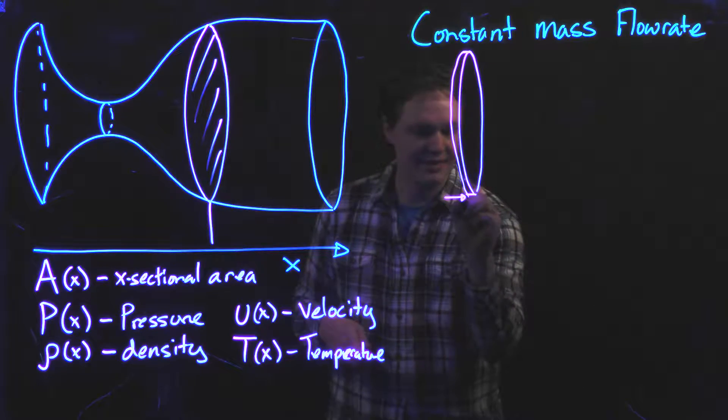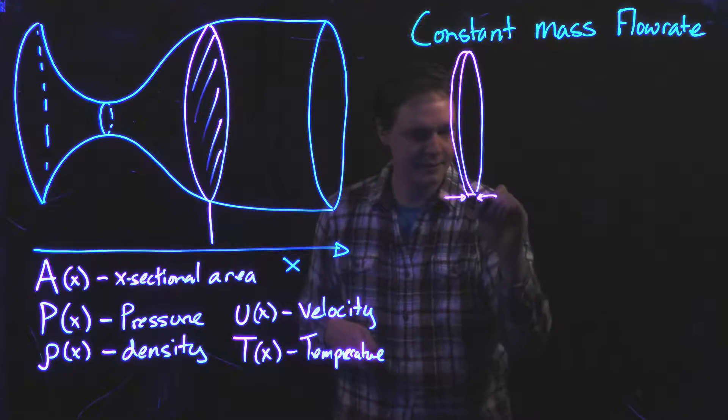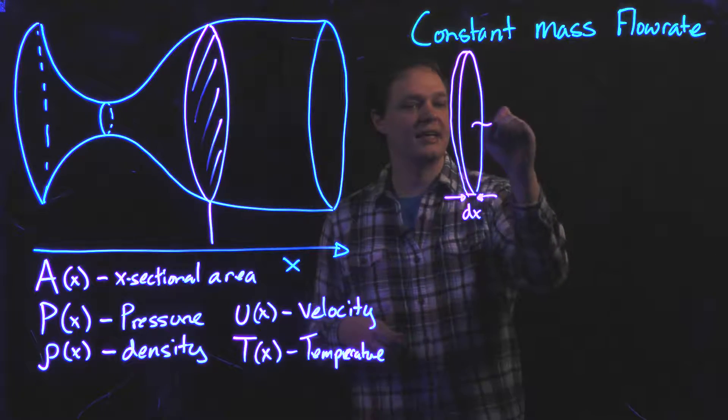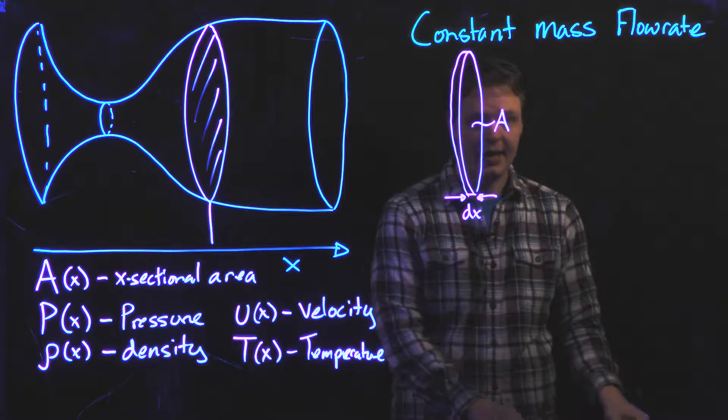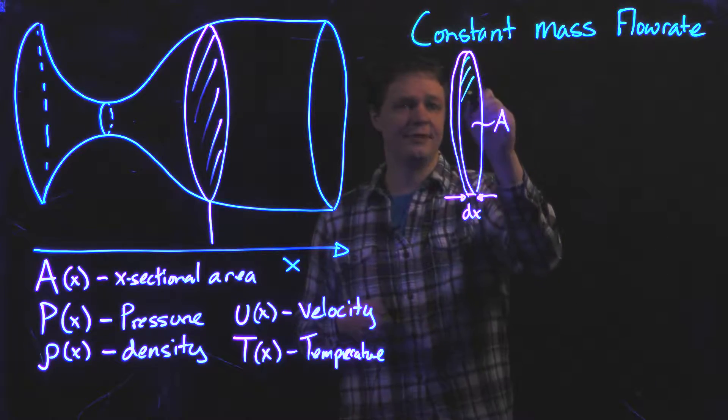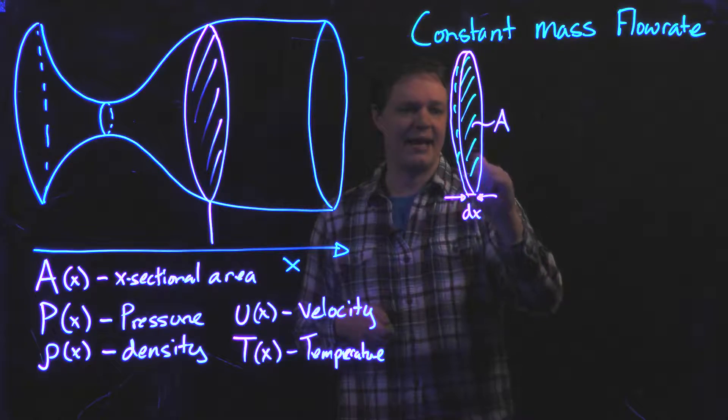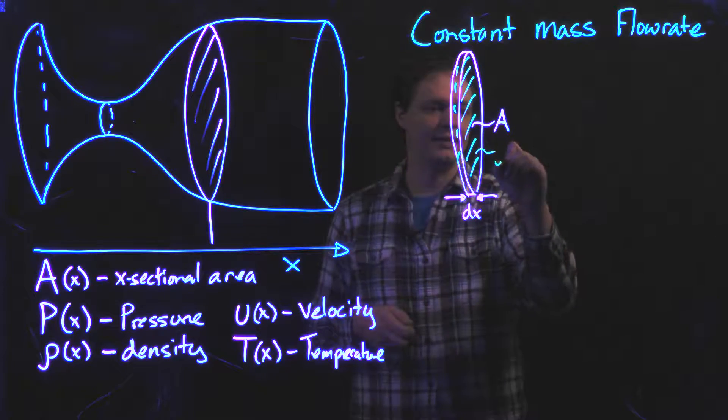I'm going to call this thickness here dx, and I'm going to say that this has cross-sectional area A, and I'm going to say that it is filled with an exhaust gas at some density ρ.